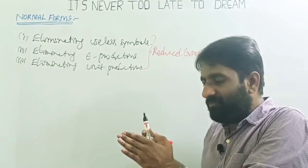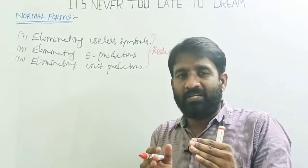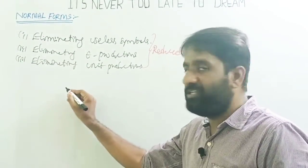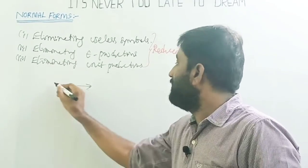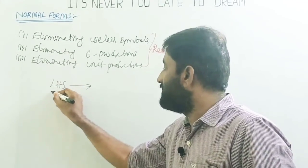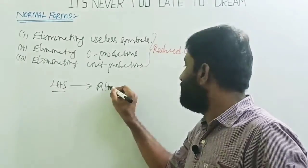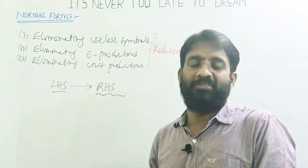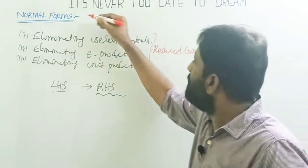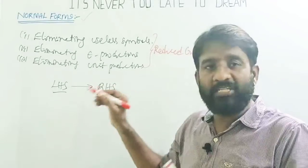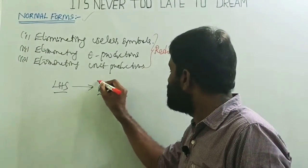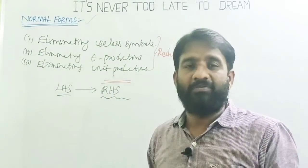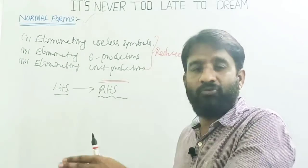Consider the definition of a context-free grammar: the LHS contains exactly one non-terminal, and the RHS can contain any combination of terminals and non-terminals at any length. However, a normal form additionally restricts the format of the RHS. That type of restricted format is called a normal form.